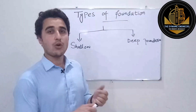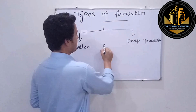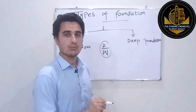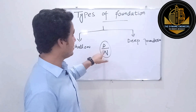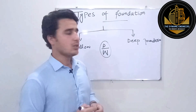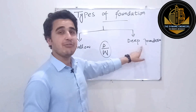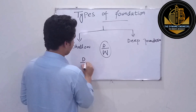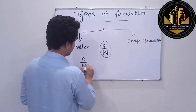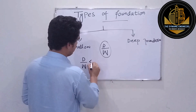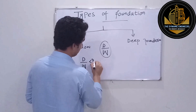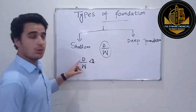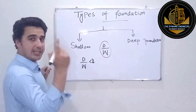The basic difference between deep and shallow foundation is the depth-to-width ratio. The normal thumb rule for differentiating between shallow and deep foundation is: if the depth-to-width ratio, that is D divided by W, is less than 2, then it is a shallow foundation.